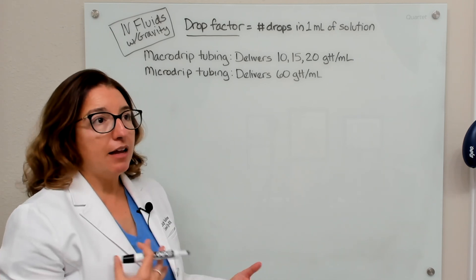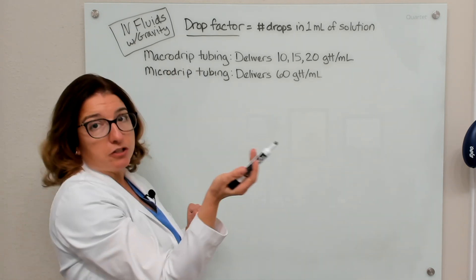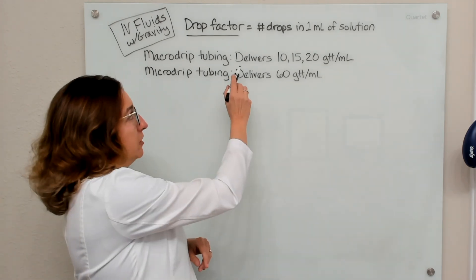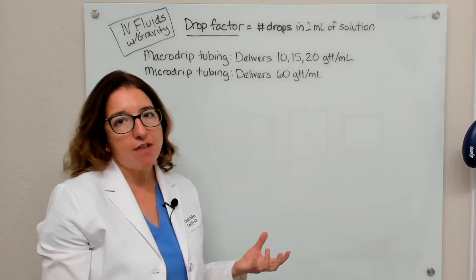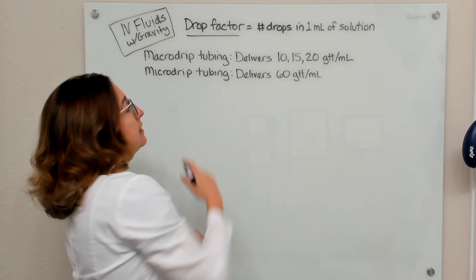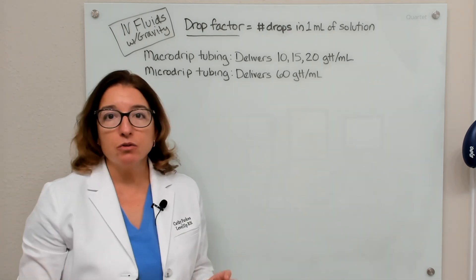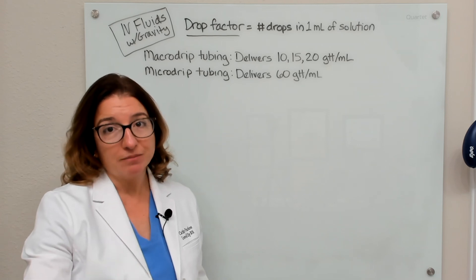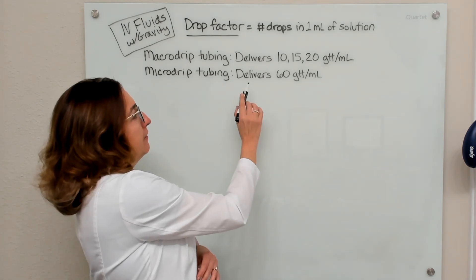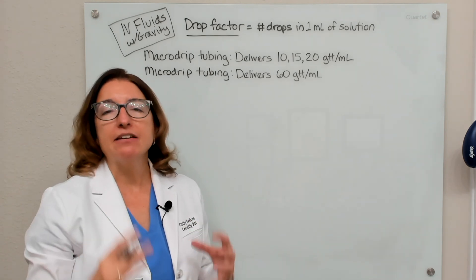When you are given a gravity problem using macro drip tubing, you will be told what the drop factor is — for example, 10 drops per ml or 15 drops per ml. However, sometimes a problem will tell you that micro drip tubing is being used and may not give you a drop factor. You need to memorize that micro drip tubing delivers 60 drops per ml, because you will not always be given that information.